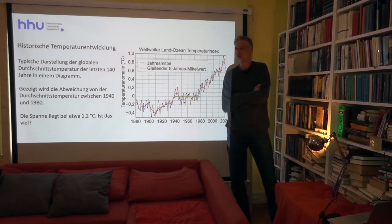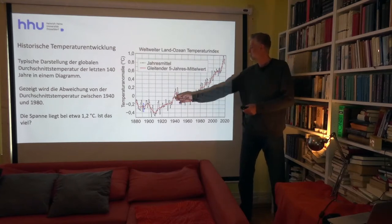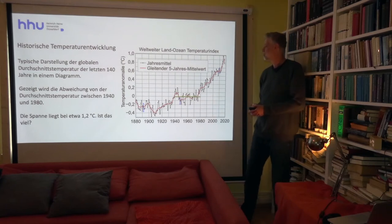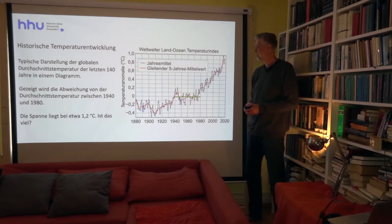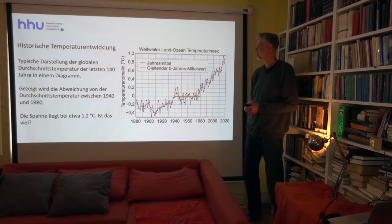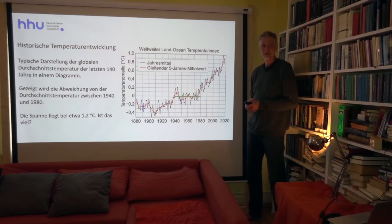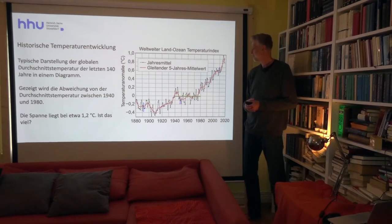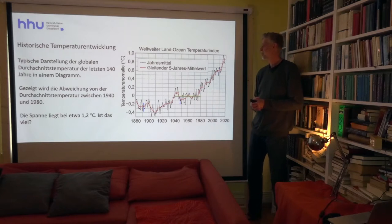Wir hatten beim letzten Mal gehört, warum es Sinn macht, Abweichungen von einer Durchschnittstemperatur anzugeben. Die Durchschnittstemperatur ist hier gewählt als die Durchschnittstemperatur der Periode zwischen 1940 und 1980, weil hier die Temperatur über einen relativ langen Zeitraum ziemlich konstant geblieben ist. Alle Temperaturen darunter sind als negative Abweichungen, darüber als positive Abweichungen gekennzeichnet. Die Daten rauschen von Jahr zu Jahr stark, deswegen macht es Sinn, gleitende Mittelwerte anzugeben.